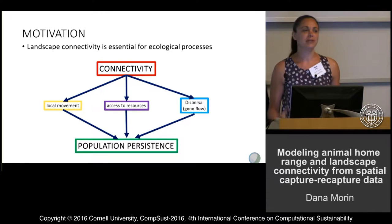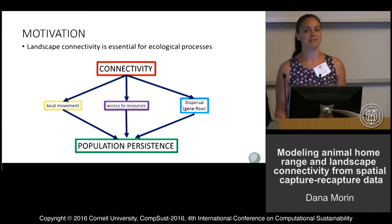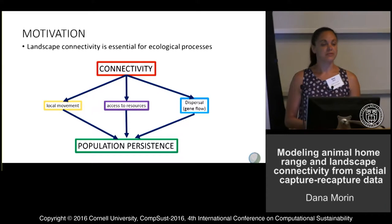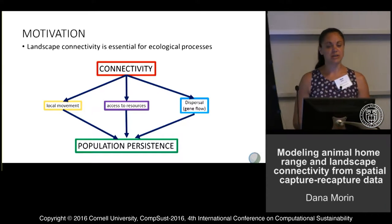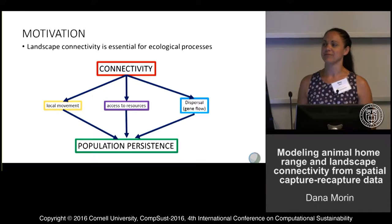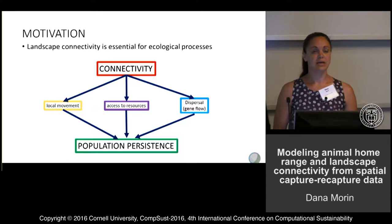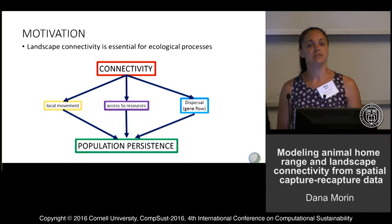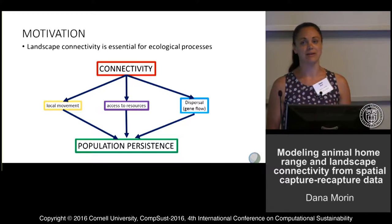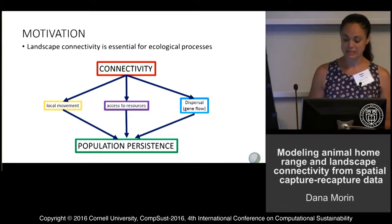So why do we care about connectivity? And from an animal's perspective, what is connectivity? Connectivity allows for localized movement, access to resources that are required for survival, either daily or seasonally, and it allows for gene flow and dispersal. All these processes are vital for population persistence.